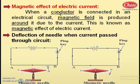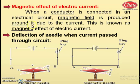Now, in place of a resistor, if we connect a conductor — a thick metal wire — in an electric circuit, it is found that a magnetic field is produced around it due to the current. So magnetic field is produced around the conductor due to the current. This is known as the magnetic effect of electric current.